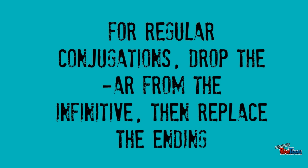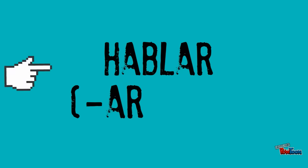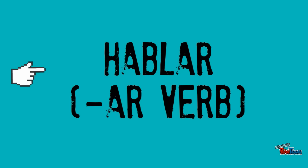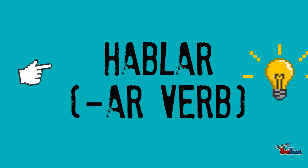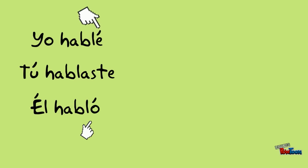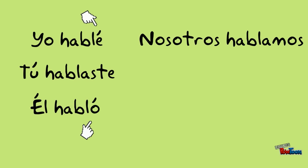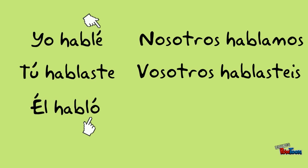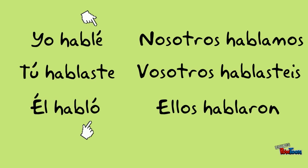Let's take a look at how we conjugate a few verbs in the preterite. Hablar, to talk, is a regular AR verb. Notice how only the ending is changing, and be sure to look and listen to how the accent marks affect the pronunciation. Accent marks are very important in the preterite. Yo hablé. Tú hablaste. Él habló. Nosotros hablamos. Vosotros hablastes. Ellos hablaron.